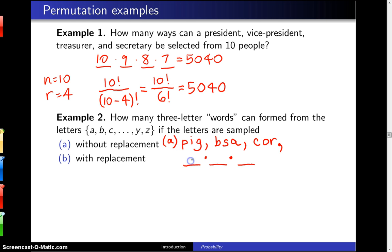There are 26 ways to choose that first letter, but since you're sampling without replacement, there are only 25 ways to choose the middle letter and finally 24 ways to choose the last letter. When you multiply that out, that is 15,600 different ways.